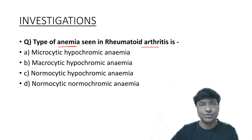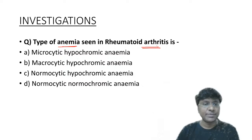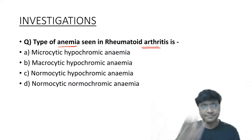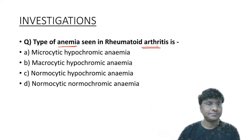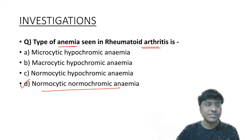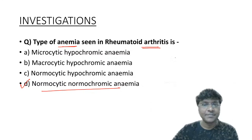The type of anemia seen in rheumatoid arthritis is normocytic normochromic anemia. This is a very important point — normocytic normochromic anemia is what you will see in patients with rheumatoid arthritis.